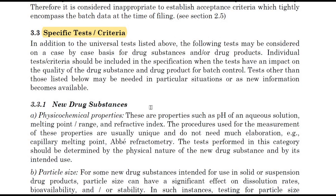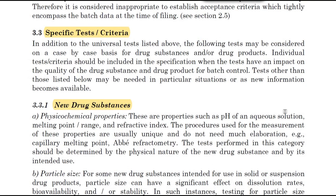In addition to the universal tests listed above, the following tests may be considered on a case-by-case basis for drug substances. Individual test criteria should be included in the specification when the tests have an impact on the quality of the drug substance or drug product for batch control. Other test criteria may be needed in particular situations or as new information becomes available.